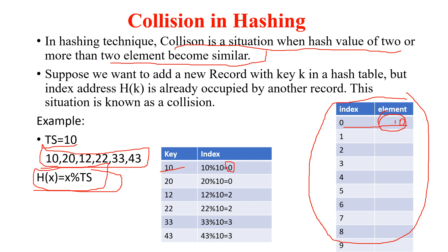Now coming to the second element, 20. Using the hash function, if you calculate the index of 20 modulus 10, you will get index 0. Now this situation is called collision, because 10 is already stored at the 0th location, and after calculating the index of 20, you are again getting index 0. You go and check the hash table — is the 0th index free? No, this index is not free. So you will not store 20, because the 0th index is already filled. You can store only one element at one index. This situation is called collision.